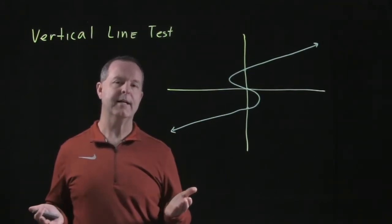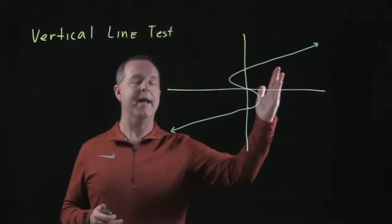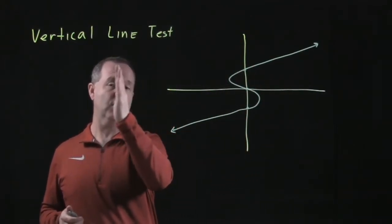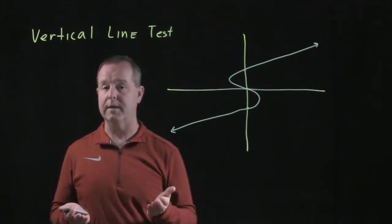What the vertical line test means is that as I pass a vertical line across a function horizontally, does it intercept the graph in more than one space?